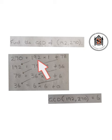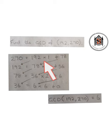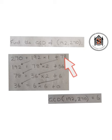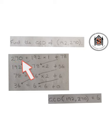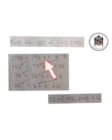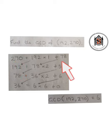192 goes into 270 once with 78 left over. So we can write this as 270 equals 192 times 1 plus 78.